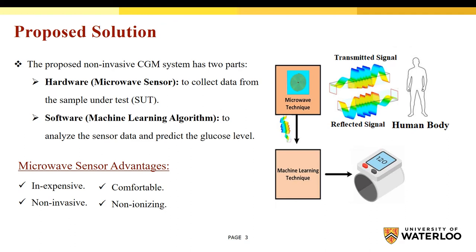Why do we choose microwave? Because it's inexpensive, comfortable, non-invasive, and non-ionizing. Non-ionizing means that the molecular structure of the biological tissue remains unaltered because the microwave sensor does not produce ionizing radiation.